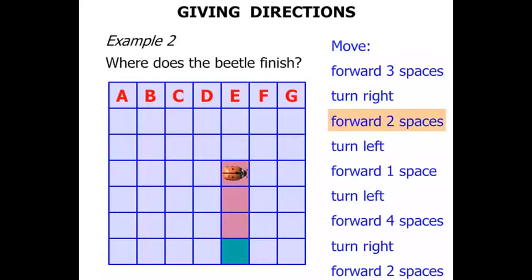Next, forward two spaces. One, two. Then the beetle is going to turn left. Pretty smart beetle. Watch the beetle turn left. Okay, there it is.